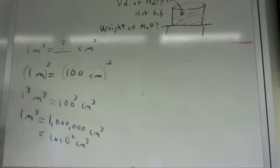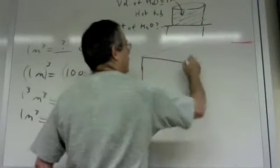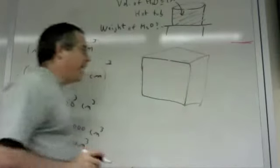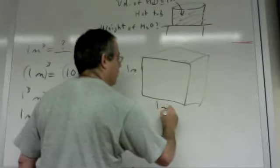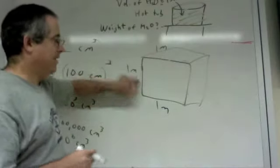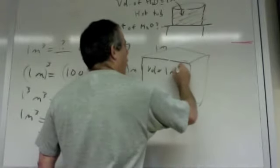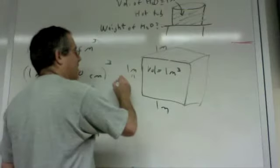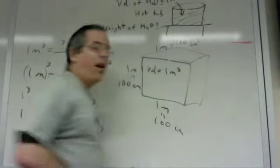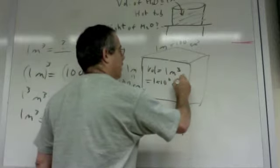You can also write that as one times ten to the sixth cubic centimeters. To show how it works with cubes visually, let's draw a cube where every side is one meter long. The volume of a rectangular shape is length times width times height, so the volume equals one times one times one, or one cubic meter. If we instead express the sides as 100 centimeters, the volume is 100 times 100 times 100, which is one million — or one times ten to the sixth cubic centimeters. That matches what we calculated.